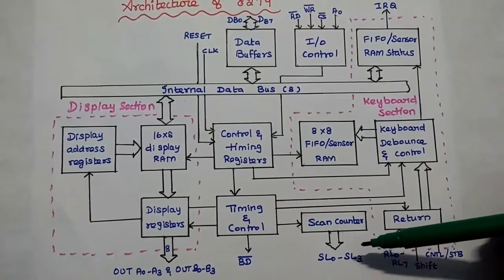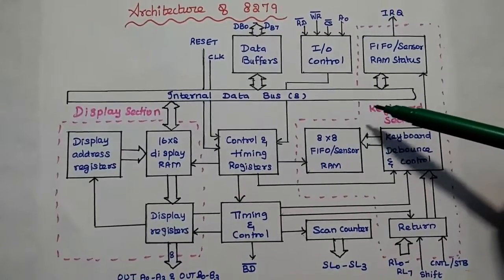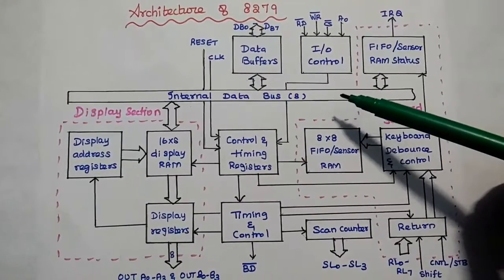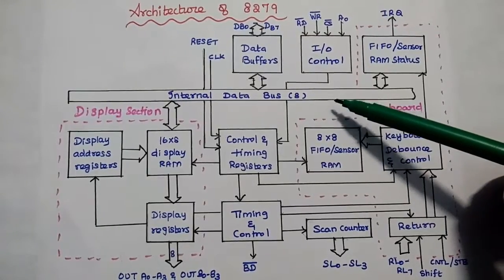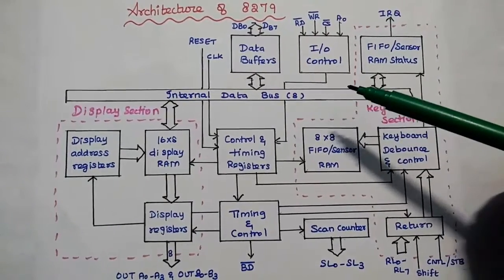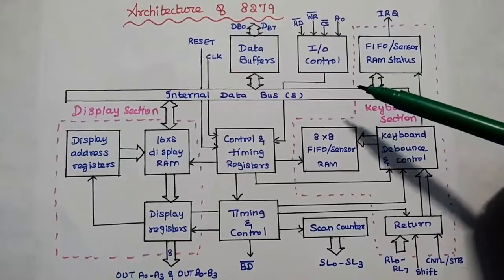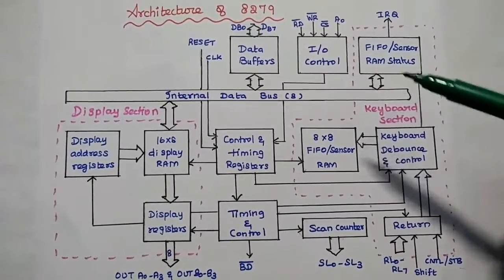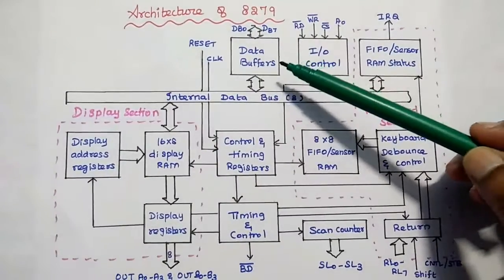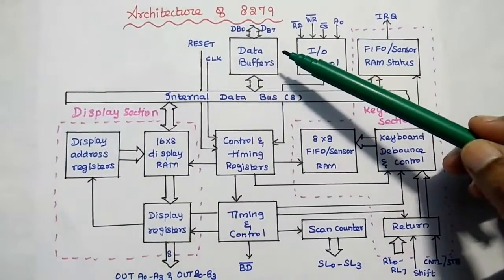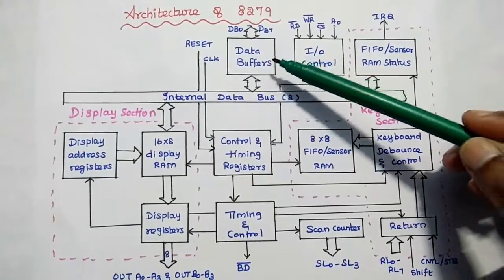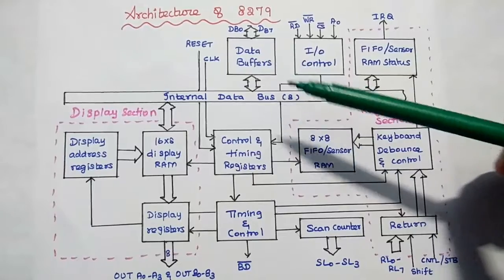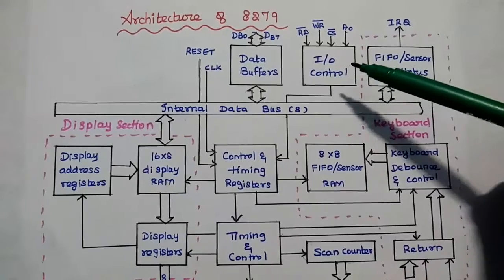The scan counter is used to scan the lines. The last one is the internal data bus, which is used to transfer data, commands, and status information between the processor and the functional units of 8279. The data bus buffer is a tri-state bi-directional 8-bit buffer, mainly used to transfer data between the system bus and 8279.